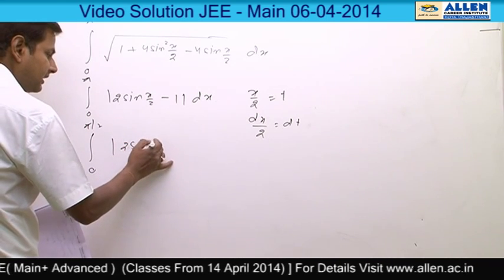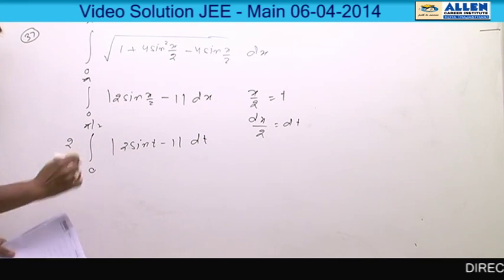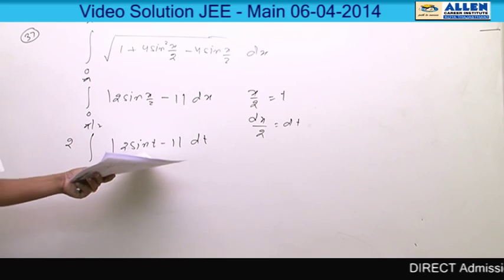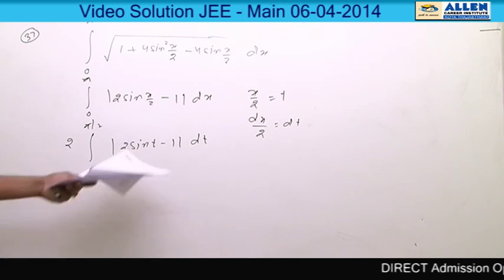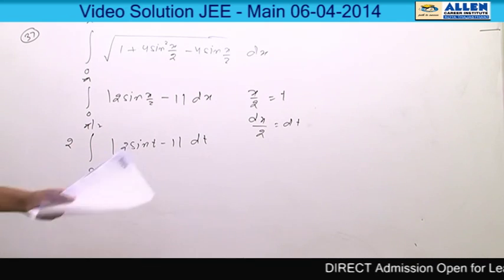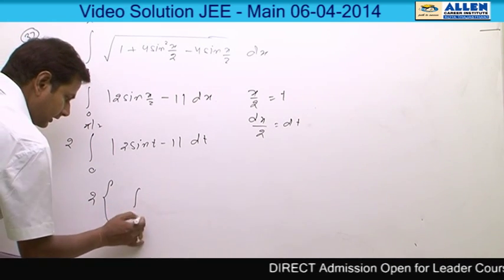Our new question is integration 0 to pi by 2, mod of 2 sine t minus 1, 2 dt. Now we have to form the cases of mod. Its critical point is sin t equals half, so we have to form the cases at sin t equals half, which means 30 degrees.